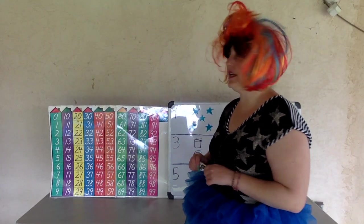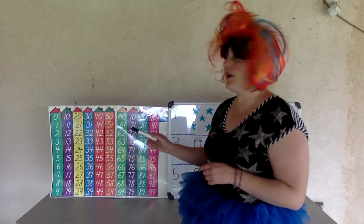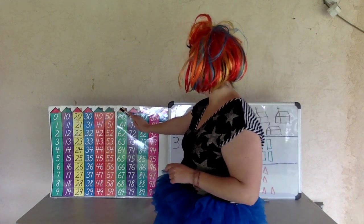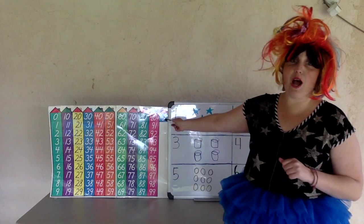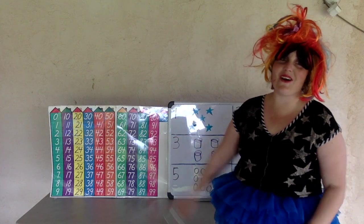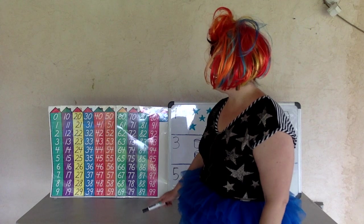Okay, let's start with 0 and then we're going to go to the 10 family, the 20 family, the 30, 40, 50, 60, 70, 80, 90, and then we're going to hit 100. Alright, are you ready? Ready? Begin.